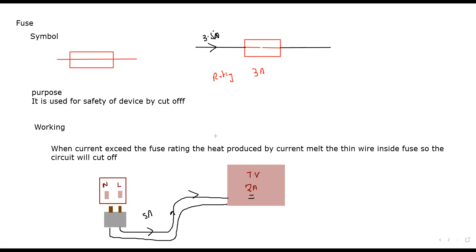For the safety of the television, we connect a fuse. The fuse is always connected in the live wire, where the charges are having energy and transferring it. The value of the fuse depends on what your appliance needs. It should not be exactly the same — for example, if your device needs 2 amperes, you can select a fuse rating of 2.5 amperes as the maximum it can allow.